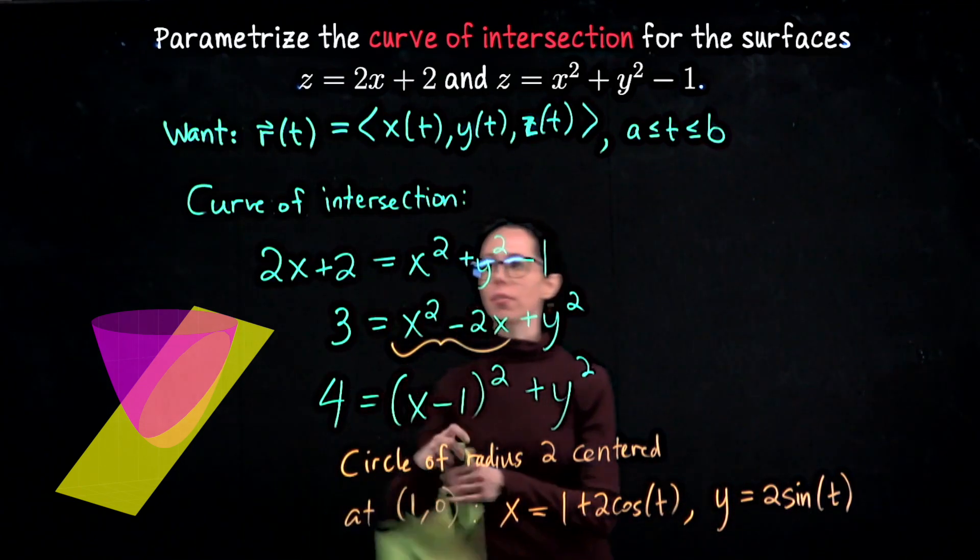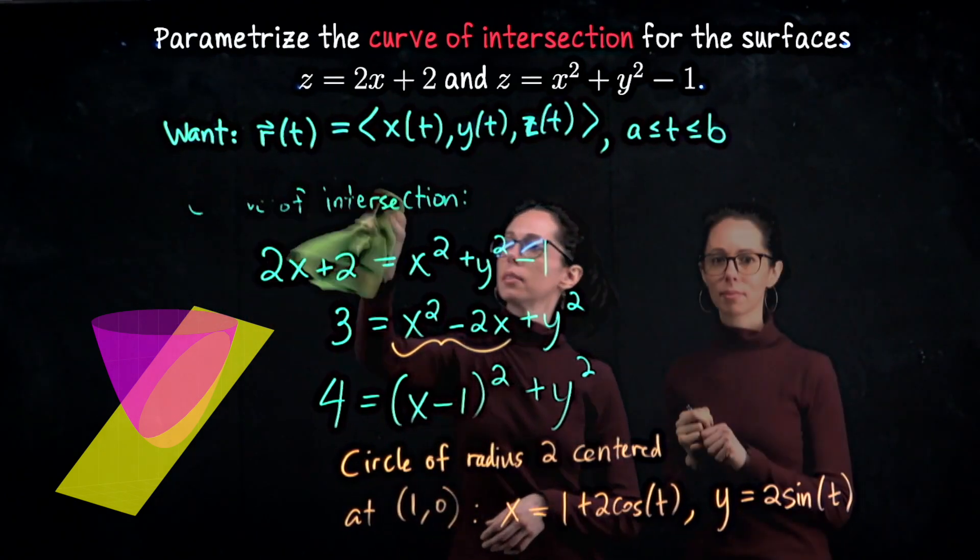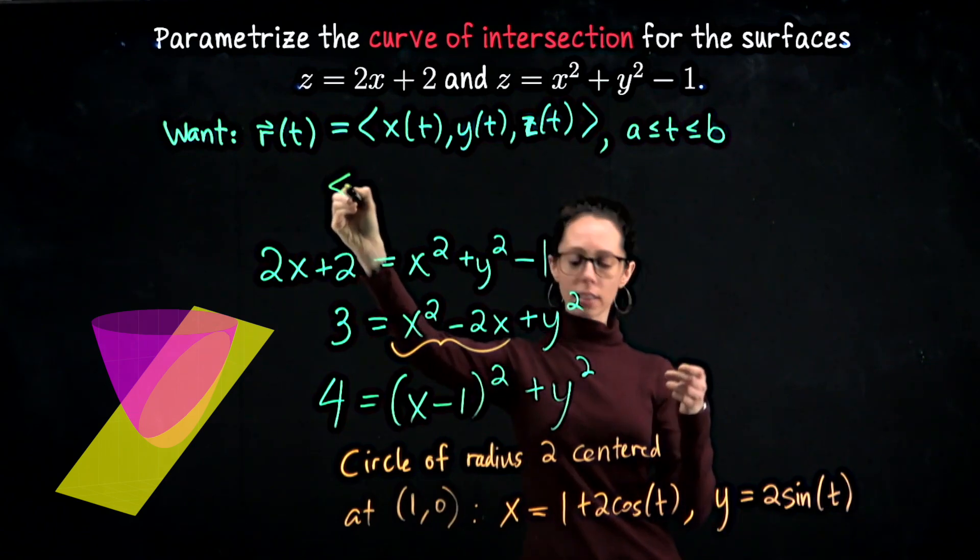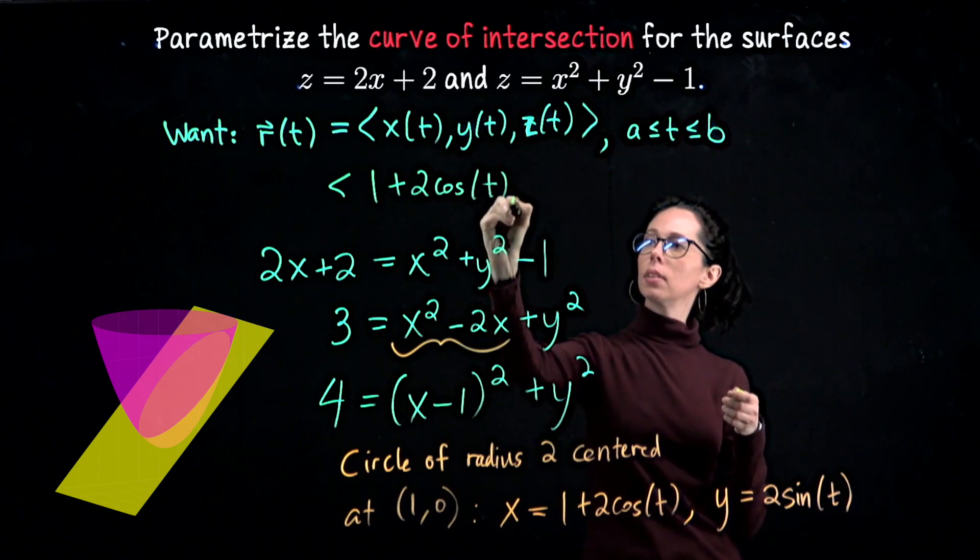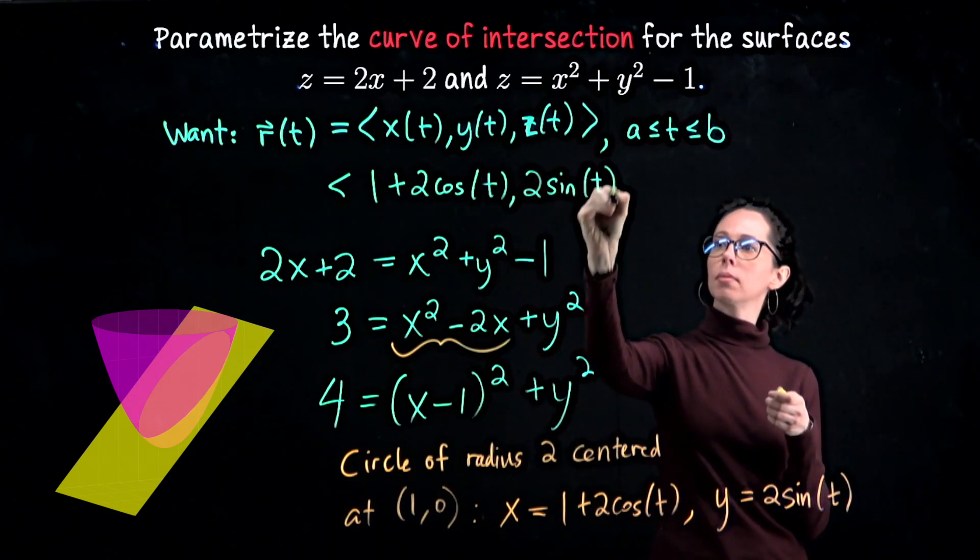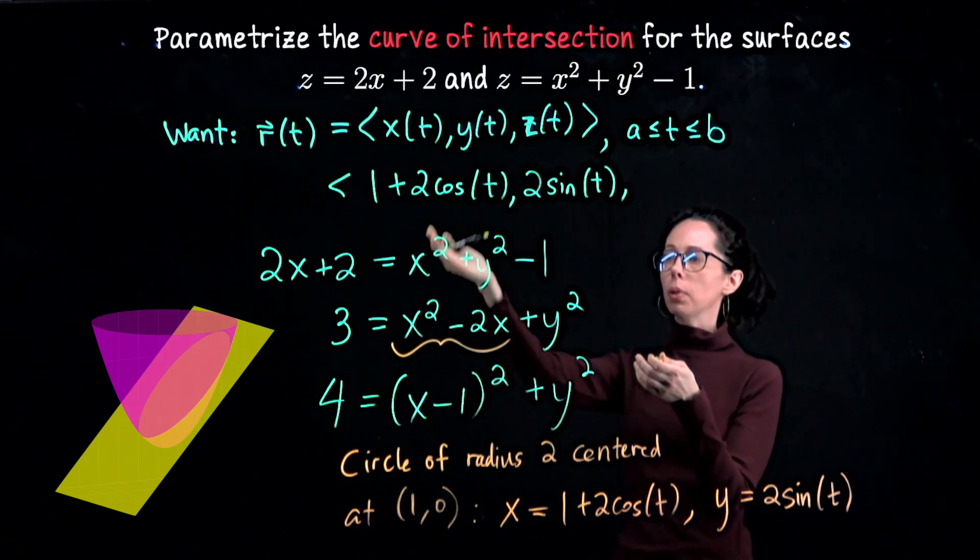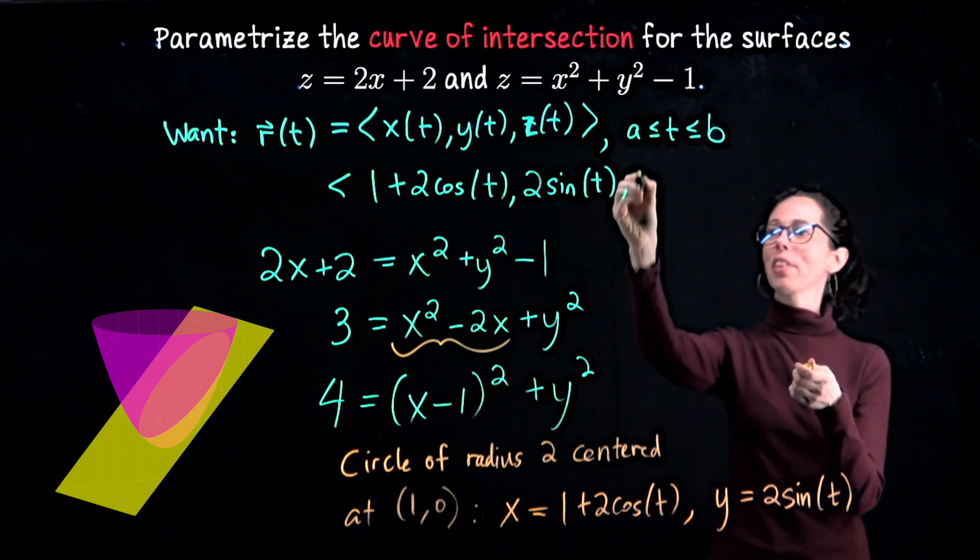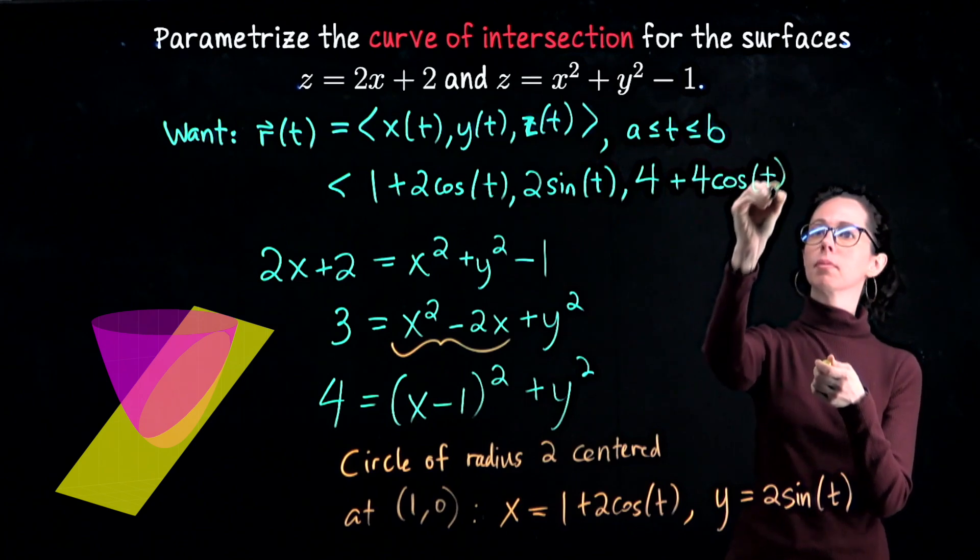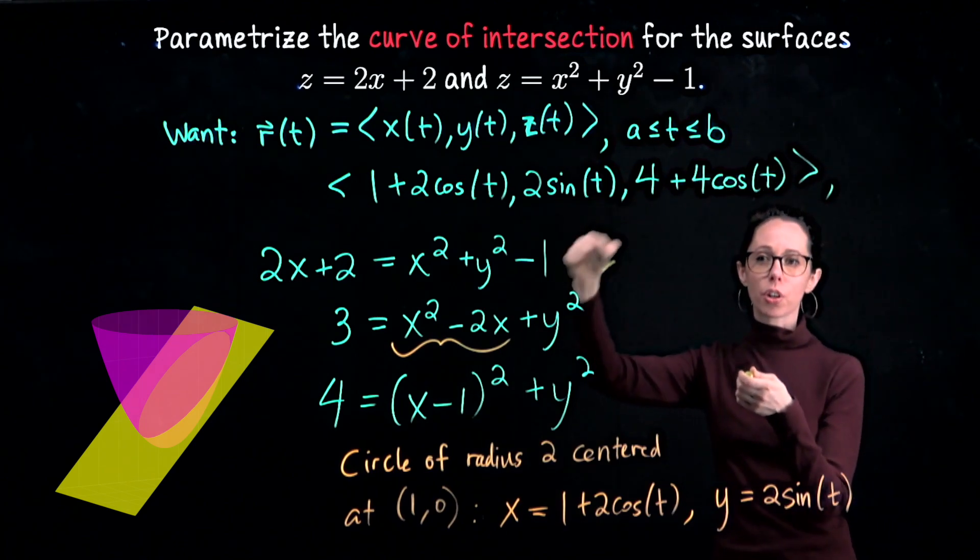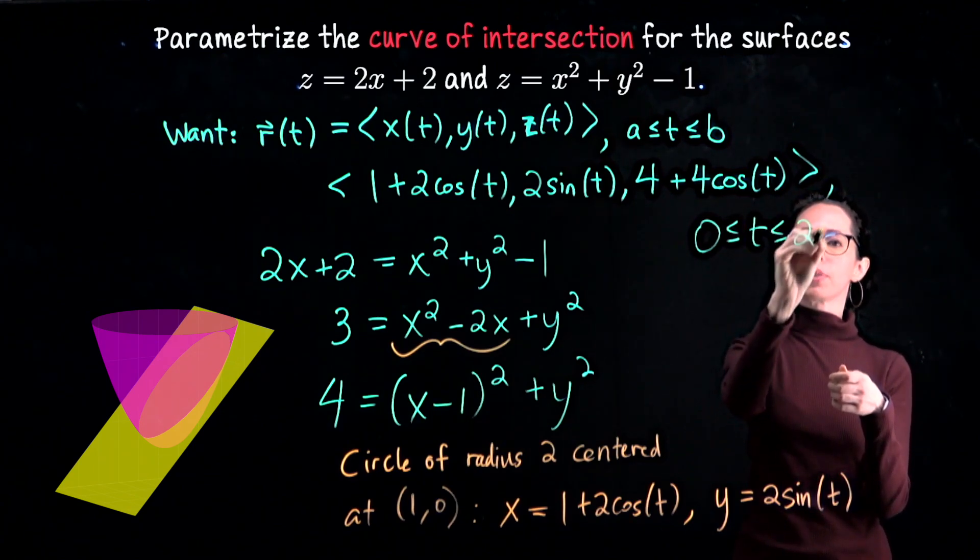I think we're ready now to say what the curve of intersection is for this parametric description. For this curve of intersection, the x coordinates are 1 plus 2 cosine of t, 2 sine of t, and then double the x coordinate and add 2. So that's 2 plus 4 cosine t plus 2 overall. That's 4 plus 4 cosine of t. We need to traverse the circle once. So using our standard polar description means the parameters should go from 0 to 2 pi.